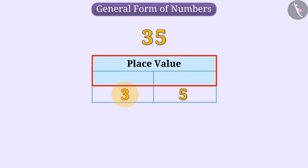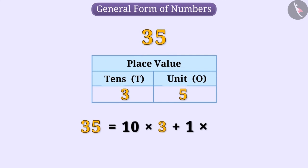In this number, 3 is at the tens place and 5 is at the units place. We can write this number as 10 × 3 + 1 × 5.